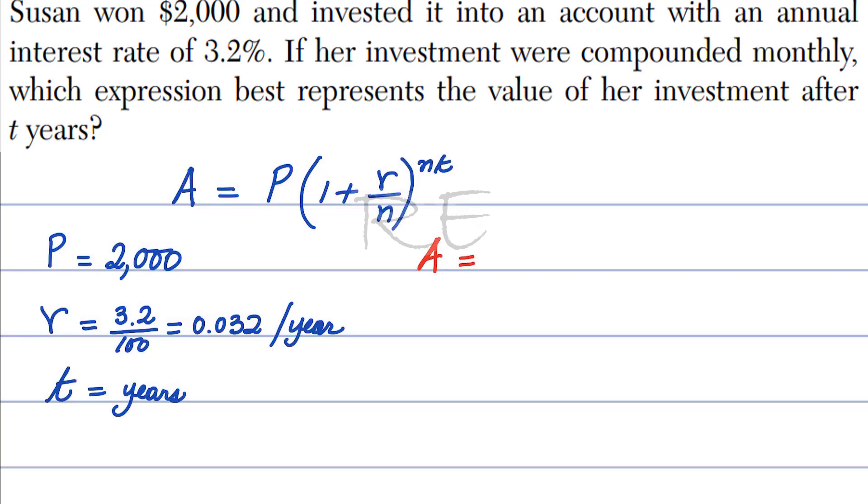Our accumulated amount will be 2,000 times 1 plus the interest rate, which is 0.032 divided by N. N is the number of compounds.